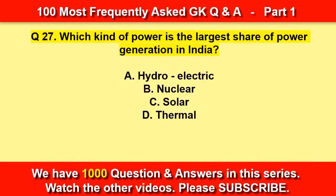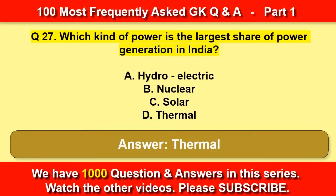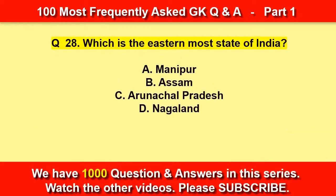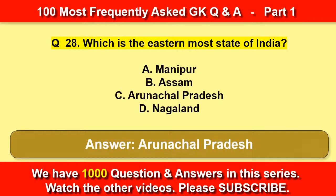Which kind of power has the largest share of power generation in India? Thermal power. Which is the easternmost state of India? Arunachal Pradesh.